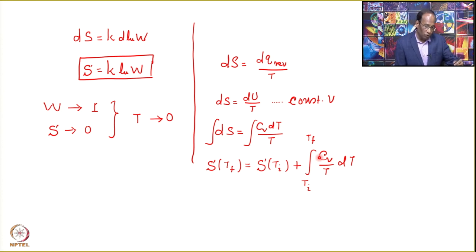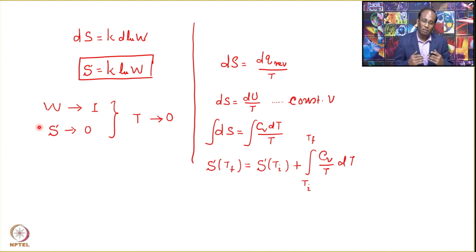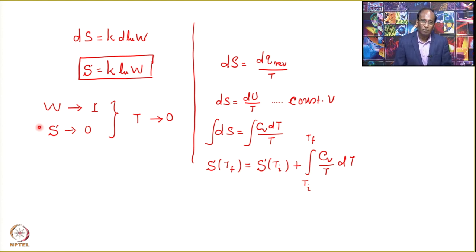In classical thermodynamics, the temperature dependence of entropy is connected with heat capacity — either C_V or C_P depending on the constraint. Whereas in statistical thermodynamics, entropy is expressed through the weight of a configuration. As temperature changes, configurations change, and we must find the weight of the most probable configuration.